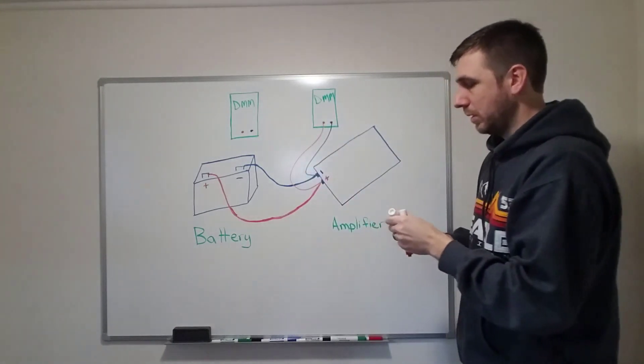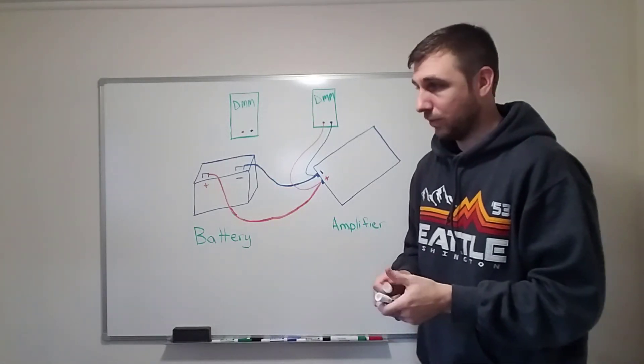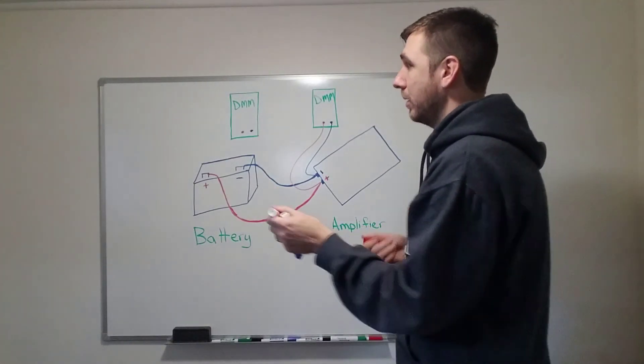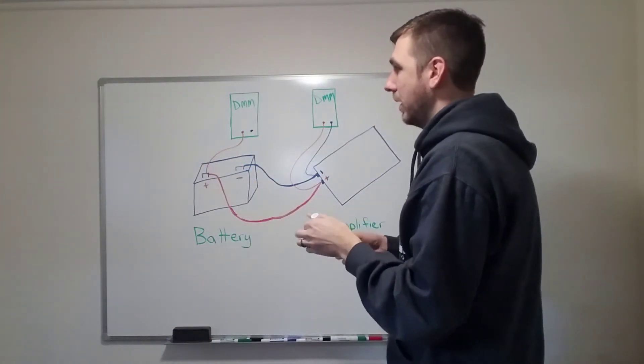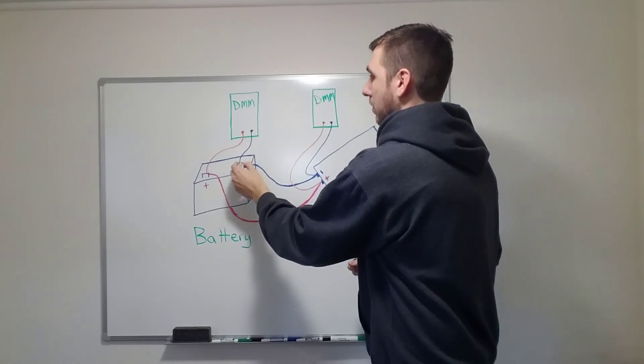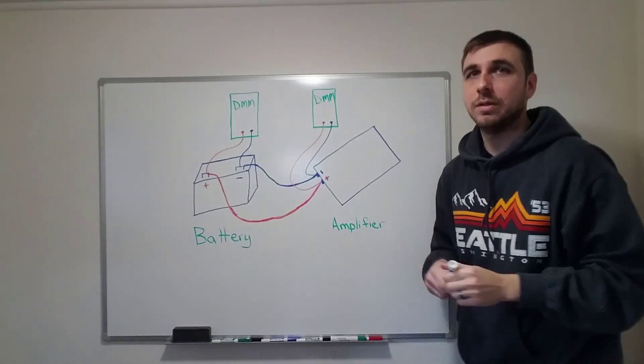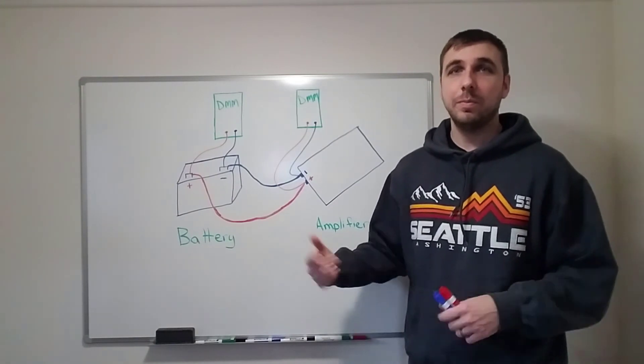And I can do the same thing if I want to test the voltage of the battery. I would connect it in parallel with the battery - positive test lead of the multimeter to the positive terminal of the battery, negative test lead of the multimeter to the negative terminal of the battery. Now let's take a closer look at the meter and go over how to set it up, and then we'll put it to the test in the car.